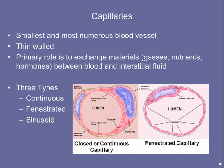Our second blood vessel type is capillaries — the smallest and most numerous blood vessels in the human body, with thousands of miles throughout the body. They are very thin-walled because their primary role is to exchange materials — gases, nutrients, and hormones — between the blood and body tissues. There are three different types of capillaries: continuous capillaries, fenestrated capillaries, and sinusoid capillaries, which vary in degree of permeability.